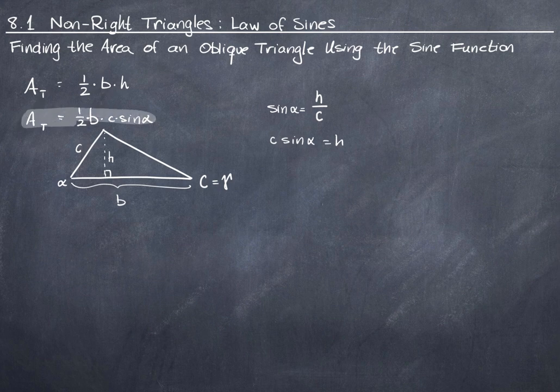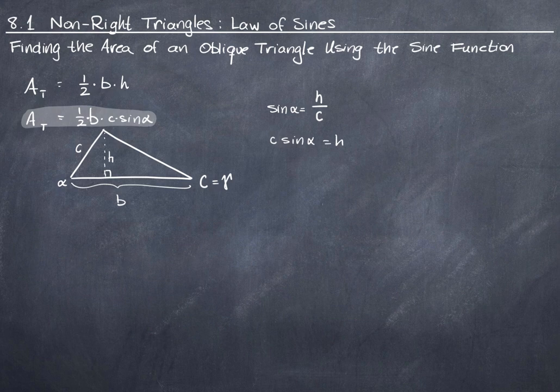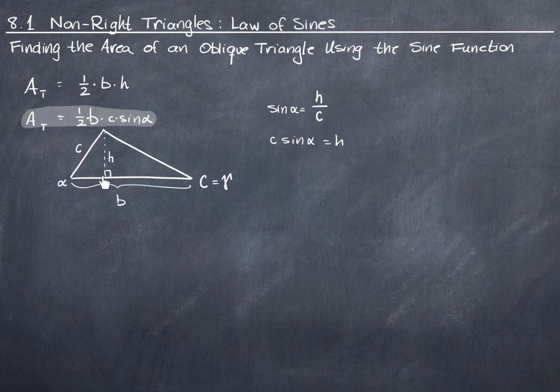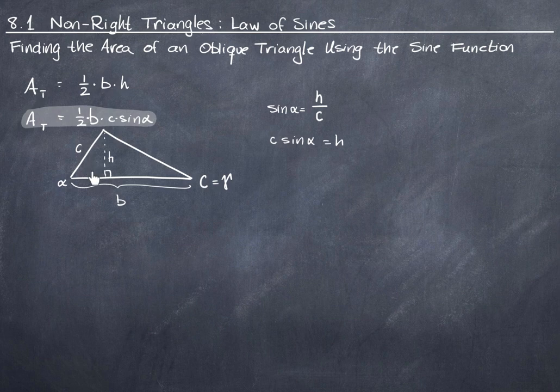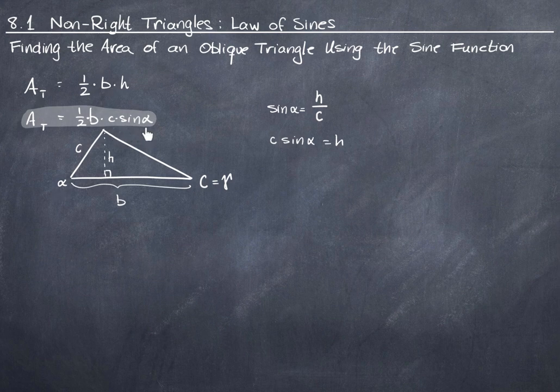This would be a good formula for you to add to your note card. I want to point out that this implies that we know the length of b and that we know the length of c, but that's not the same as knowing the height. Can we find the height just from the lengths of these two sides? Not directly, no. But we can find this height indirectly by knowing the sine of this angle here. If we don't know the sine of this angle, we can take the sine of this angle to help us find the area of the triangle.